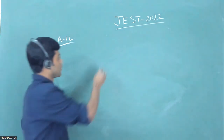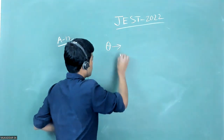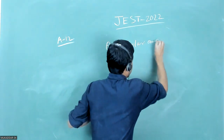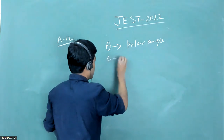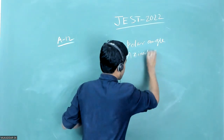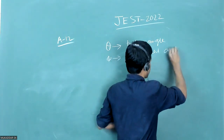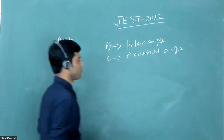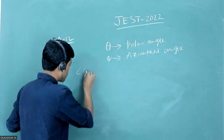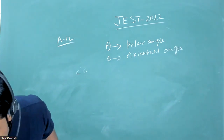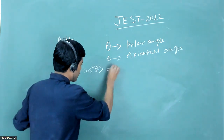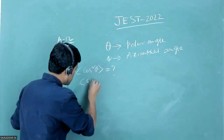In that question, theta and phi are given, where theta is the polar angle and phi is the azimuthal angle. For a unit sphere, we have to calculate the expectation value of cosine square theta and the expectation value of sine square theta.